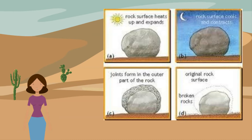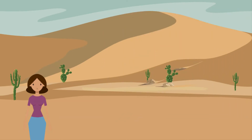In deserts, the large daily range in temperature produces insolation weathering of rocks. Minerals in the rocks expand and contract at different rates, setting up internal stresses, and the outer rock layers flake off — so-called exfoliation or onion peeling. On flatter surfaces, especially where rock joints are widely spaced, freeze-thaw breaks up the rocks into massive boulders to form boulder fields.